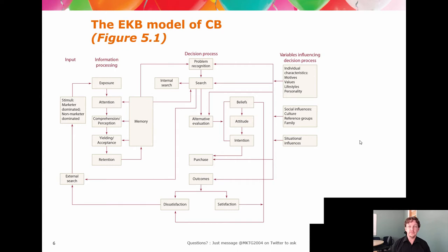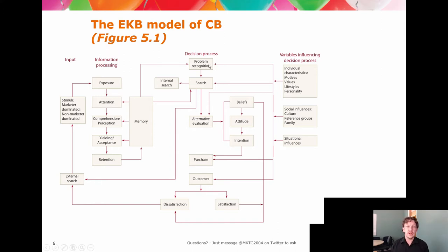What I want you to apply it to is how you're dealing with product selection for the third assignment. Go through the product decision process step by step. You have a problem you recognise — an assignment topic to address. How are you going to do the selection? Internal search? External search? What type of product do you want to select? How do your beliefs, attitudes, and intentions influence that?